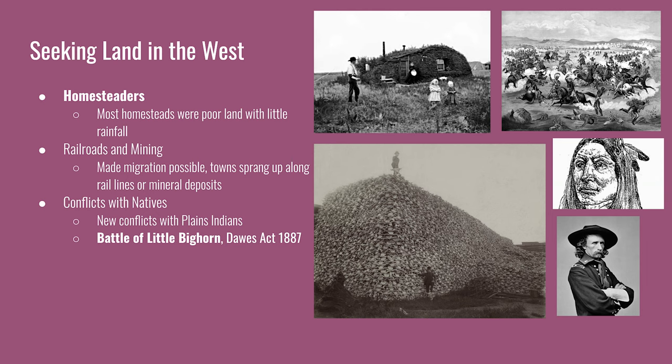As more settlers moved west, conflicts with natives became more frequent. The Plains tribes the U.S. was most frequently in conflict with were the Sioux, consisting of the Dakota and Lakota nations. Early in the period, the U.S. Army did not have a clear military advantage and experienced significant losses, as in the Battle of Little Bighorn, where Sioux warrior Crazy Horse led an ambush of General George Custer's troops. However, the growth of railroads reaching west made the U.S. Army more mobile and well-supplied, and new weapons technologies developed during the Civil War made them more deadly.